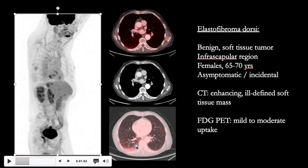So, two cases showing benign uptake: a rare cardiac angiosarcoma and a benign tumor called elastofibroma dorsi in a characteristic infrascapular region. Thank you for watching.